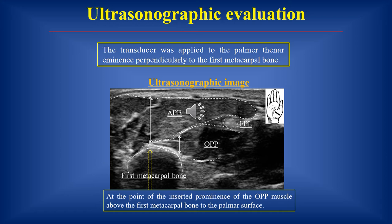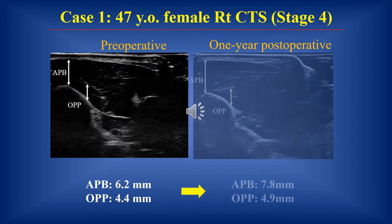A transducer was applied onto the palmar surface of the hand. Both muscles were analyzed by measuring the thickness from the first metacarpal bone to the palmar surface of the APB. We examined APB depth and OPP depth.